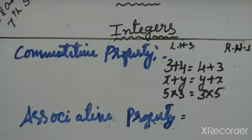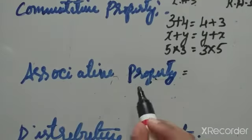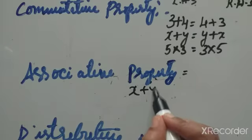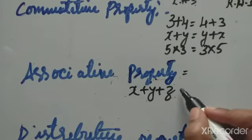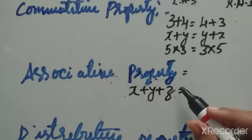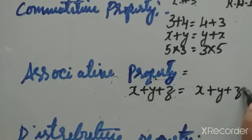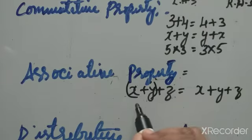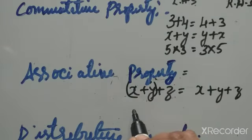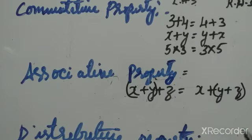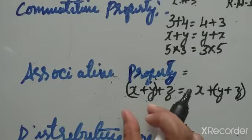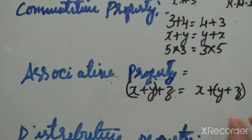In the associative property, the numbers and letters are one and the same on both sides; only the brackets change. For example, x plus y plus z: on the left-hand side x plus y plus z, and on the right-hand side also x plus y plus z — same letters. If you have a bracket for the first two terms, then on the right side put the bracket for the second and third terms.